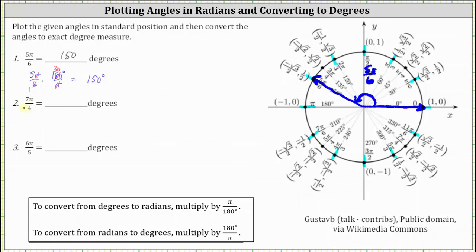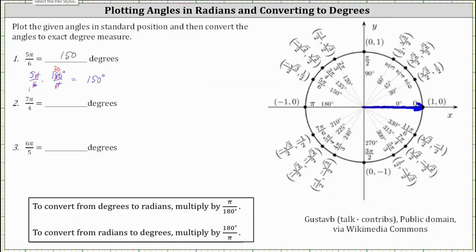Here, because the denominator is four, we want to mark off one-fourth pi radians. The initial side is along the positive x-axis. Since half a rotation counterclockwise is pi radians, if we divide this into fourths we have one-fourth pi, two-fourths pi, three-fourths pi, four-fourths pi, or pi. Continuing: five-fourths pi, six-fourths pi, seven-fourths pi, and eight-fourths pi, or two pi.